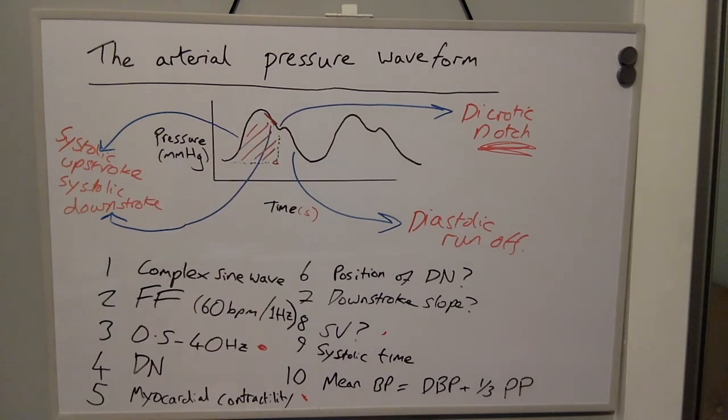The systolic time indicates the myocardial oxygen demand, whereas the diastolic time indicates the myocardial oxygen supply.